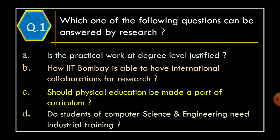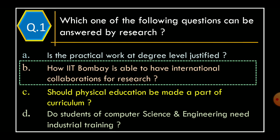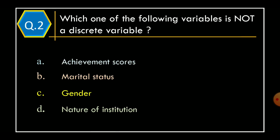Which of the following questions can be answered by Research? Option A: is the practical work at degree level justified? Option B: how is IIT Bombay able to have international collaboration for research? Option C: should physical education be made a part of a curriculum? Option D: do students of computer science and engineering need industrial training? The correct answer is Option B: how IIT Bombay is able to have international collaboration for research.